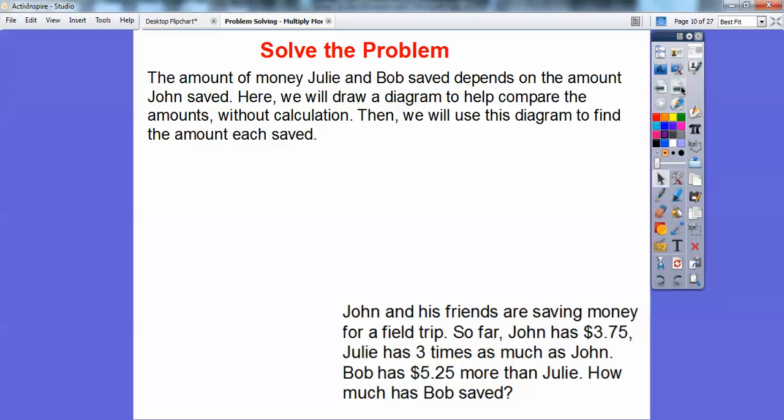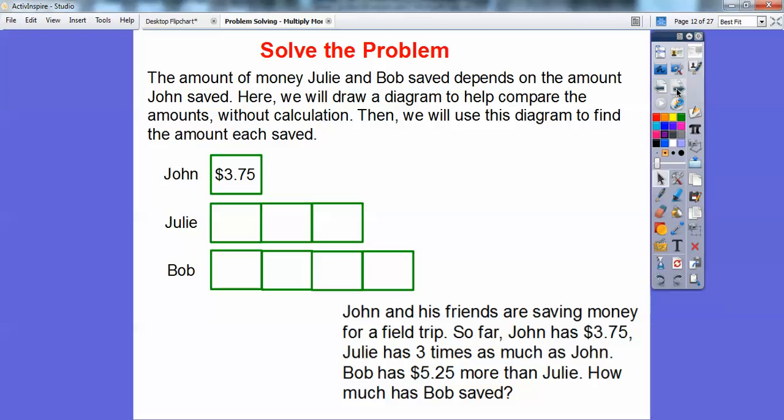We're going to draw boxes here. The amount of money Julie and Bob saved depends on the amount of money that John saved. So here we'll draw a diagram to help compare the amounts without calculations. Then we'll use the diagram to find the amount that each saved. First of all, it says that John saved $3.75. So there's a box right there. And then it says Julie saved three times as much as that. So we're going to draw three boxes right there.